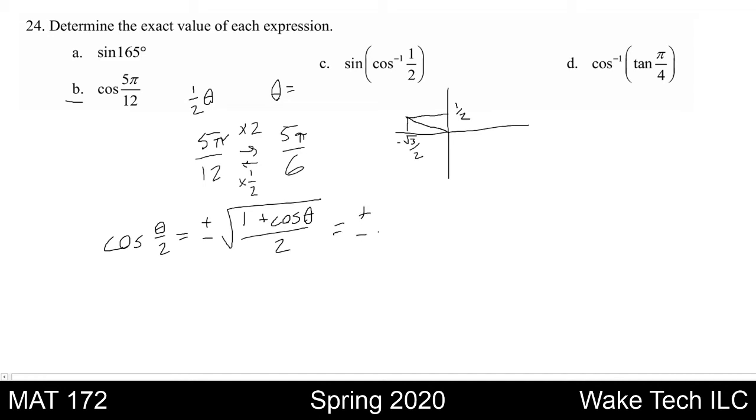Our numbers are then going to be ±√(1 + (-√3/2)) all divided by 2.